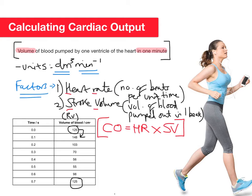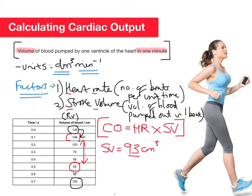Let's get stroke volume first. We can see the volume of blood in the ventricle increases — that's when the ventricle is filling with blood, most likely during atrial systole. The highest value is 148 cm³ and the lowest value is 55 cm³. So stroke volume = 148 − 55 = 93 cm³. All we've done is find the difference between the highest and lowest values in the table.